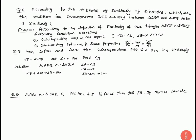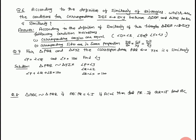Now we start chapter 6 important question number 6: According to the definition of similarity of triangles, which condition is necessary for correspondence DEF to ZXY between triangles DEF and XYZ to be similar? The following conditions are necessary: number 1, corresponding angles are equal, that is angle D equal to angle Z, angle E equal to angle X, angle F equal to angle Y; and corresponding sides are in the same proportion: DE upon ZX equal to EF upon XY equal to DF upon ZY.